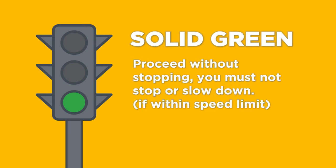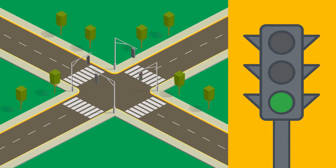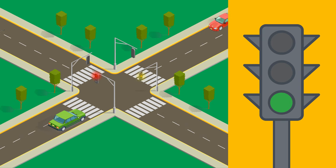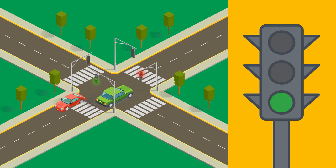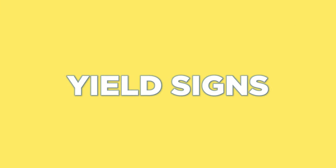Solid green light: proceed without stopping. You must not stop or slow down if you are within the speed limit. Green traffic lights mean go, but before you accelerate, take a second look both ways to make sure your path is actually clear.